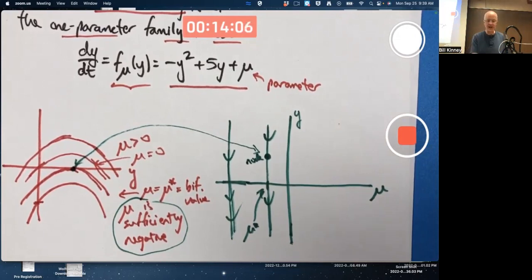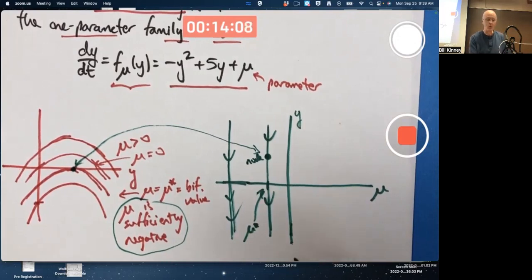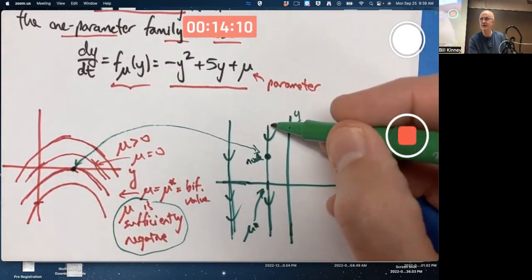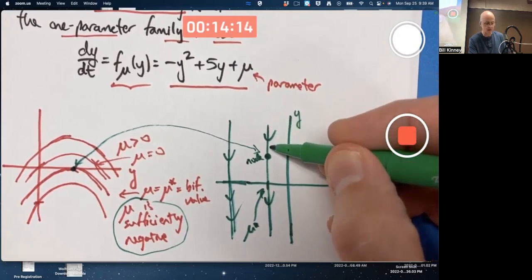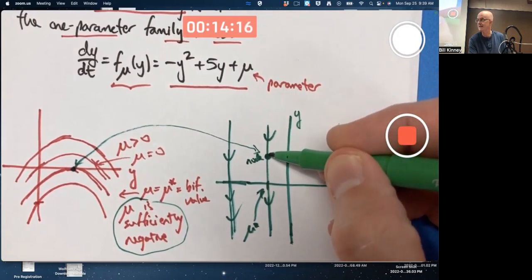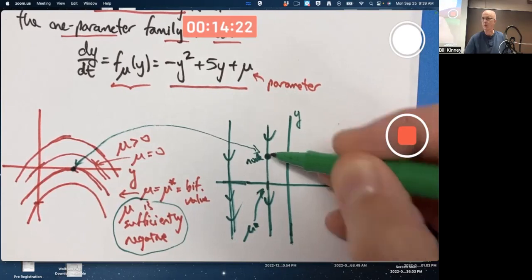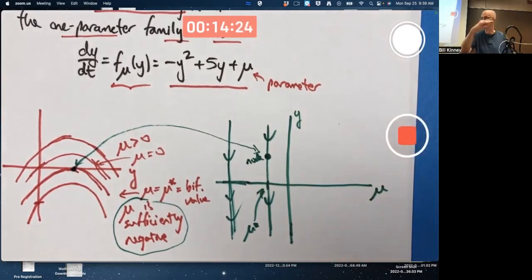Now, there are some subtleties that the phase line hides. One subtlety it hides is that if your initial condition is up here, the solution is going to decrease toward the equilibrium point asymptotically. Approach it as t goes to infinity, but never reach it, technically speaking. Corresponds to a horizontal asymptote if you drew the slope field.